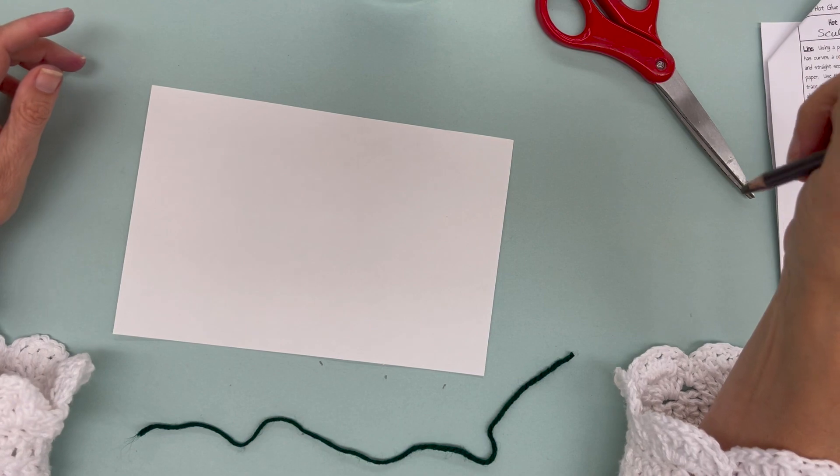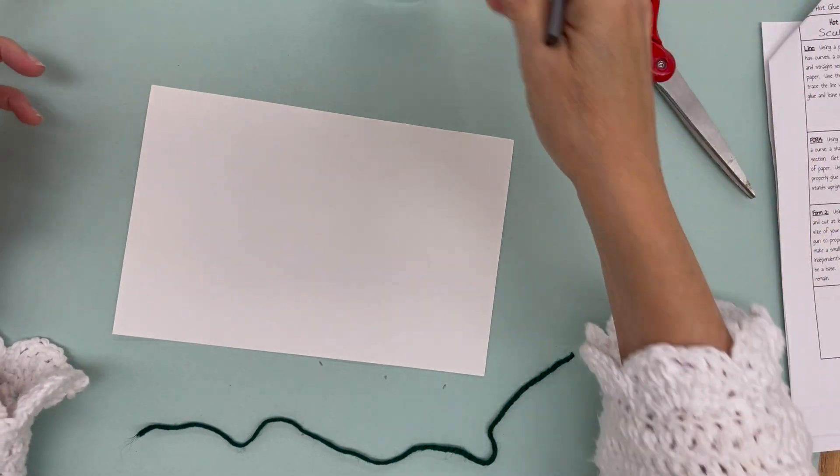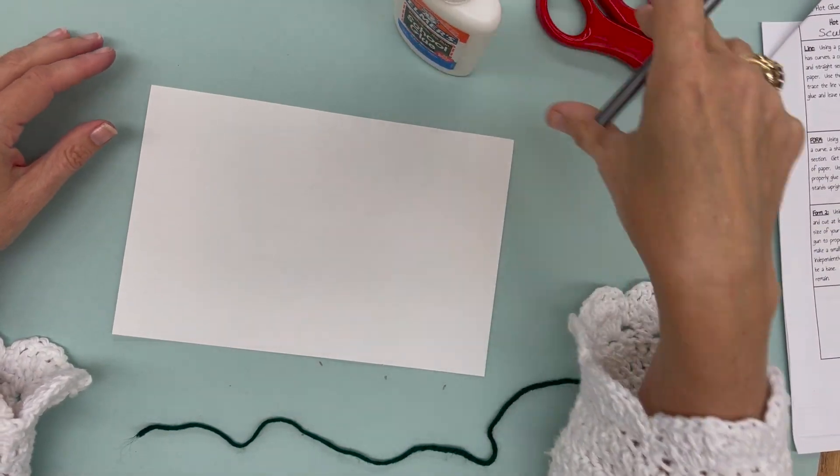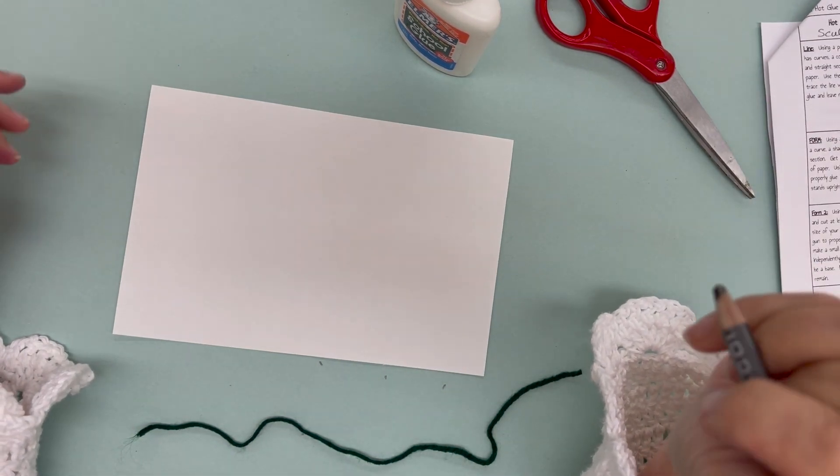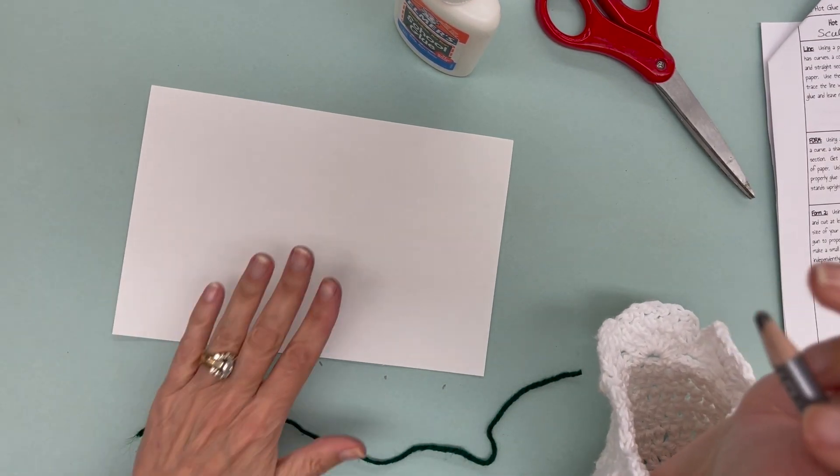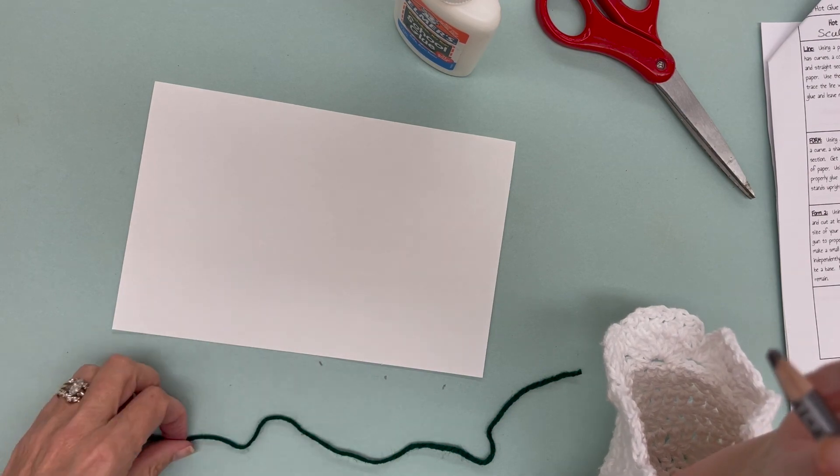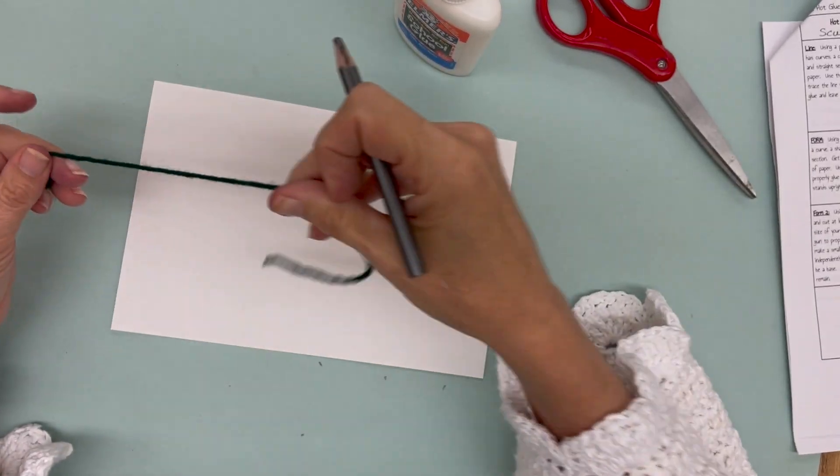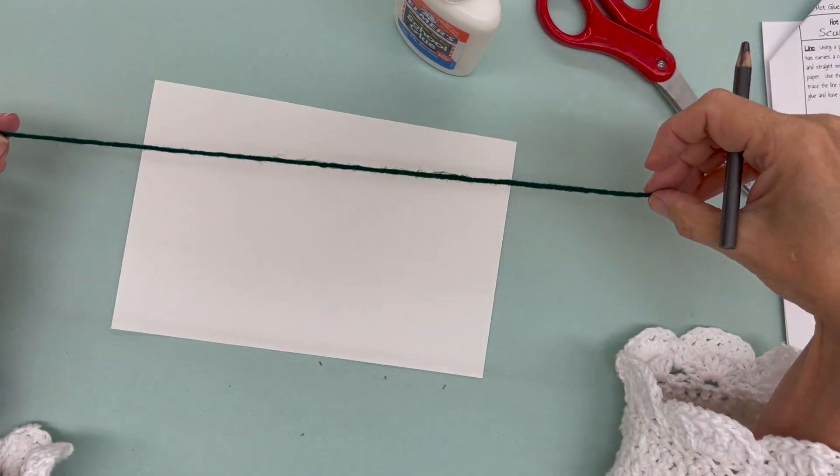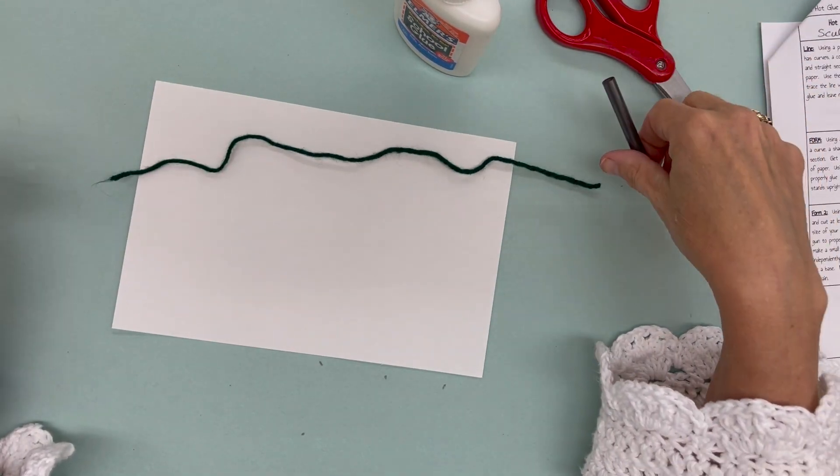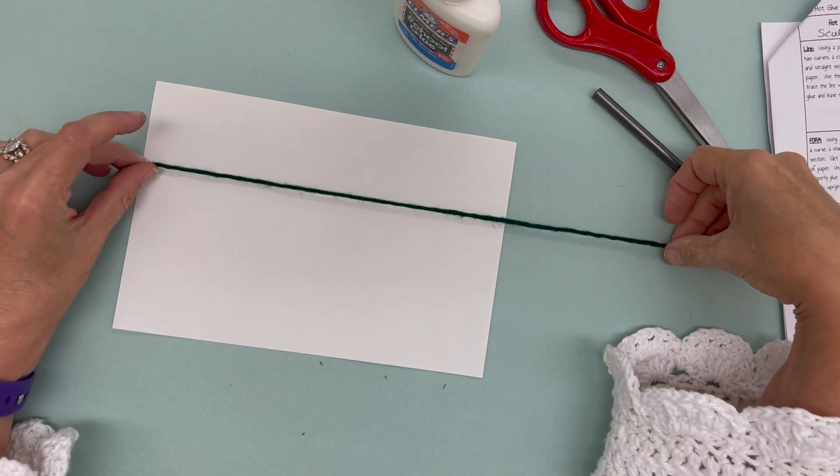Hello artists, Mrs. Castle here, and we're doing some white glue exercises. We're going to do the one called line. You need a six by nine piece of paper and you need a piece of yarn. You don't need a lot of yarn, this is probably about a foot long or a little bit less.